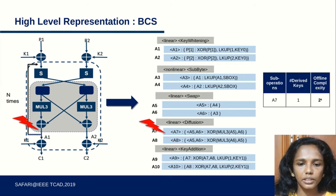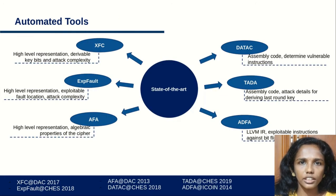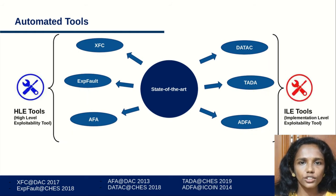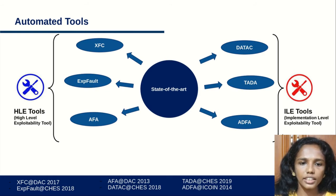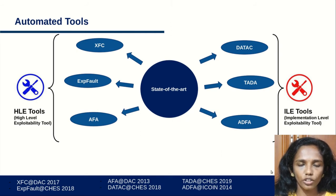One example of high-level representation is the BCS representation, which is an HTML-like language. An alternate direction of research involves tools that work on software implementations like assembly, LLVM IR, etc. Categorizing these tools into two classes: the first class works at the high level — called HLE tools — and does sophisticated analysis; the second class works at the implementation level and considers simple fault models.